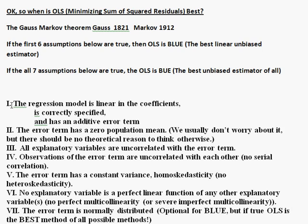Assumption one says that the regression model is linear in the coefficients, is correctly specified, and has an additive error term. Even though it's one assumption, it really has three different ideas packed into it. Rather than rushing through this first assumption since it has three parts, I'm going to end this overall overview lecture here and come back to discuss assumption number one and give it the time it deserves.